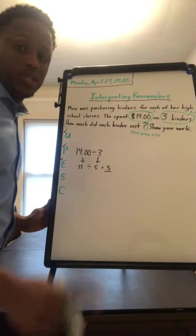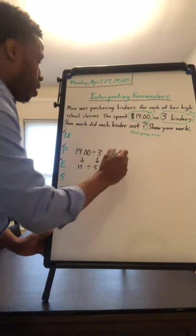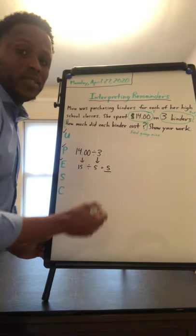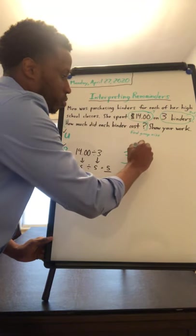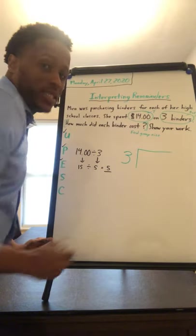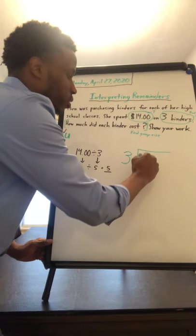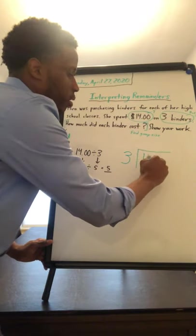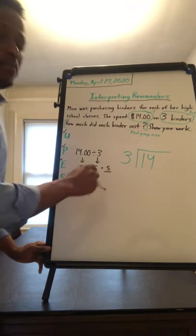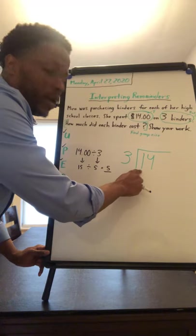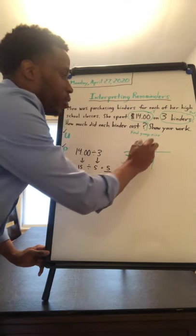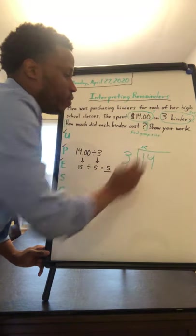So I'm going to set up the problem. I know that my divisor is three, so my three goes outside of the box or the house. And my dividend is $14. I'm first going to ask myself, how many times does three fit into one? And we know three is bigger than one, so we're going to place an X above the one.